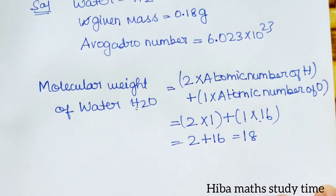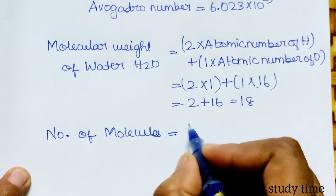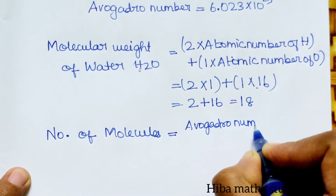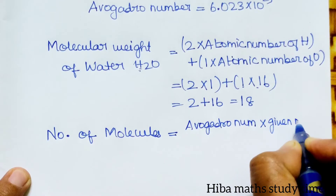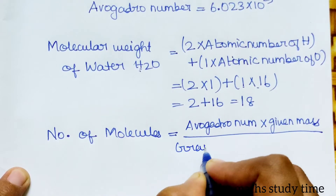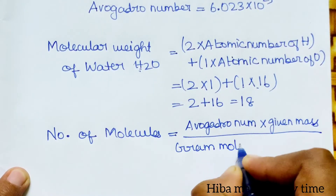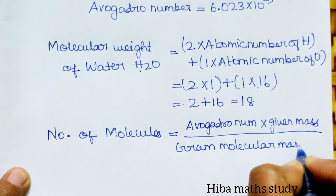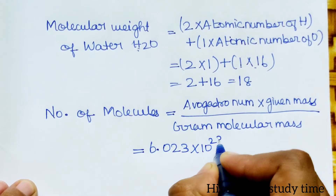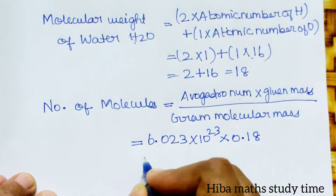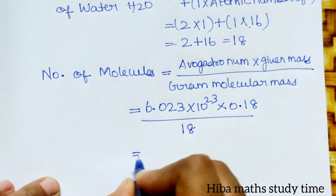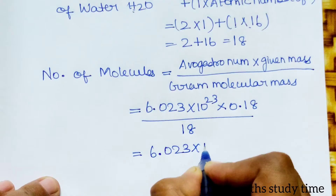The number of molecules is equal to the given mass divided by gram molecular mass, multiplied by Avogadro's number, which is 6.023 into 10 to the power 23, multiplied by the given mass 0.18, divided by the gram molecular mass.